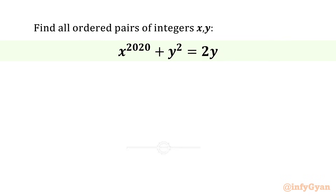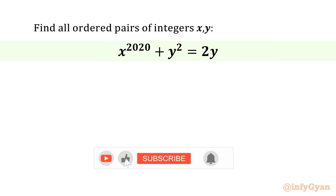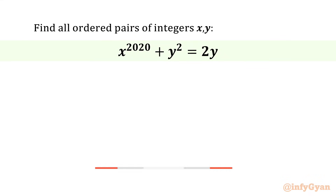Welcome to Infigyan, my dear friends. Today in this video we are going to solve one very interesting question from algebra. We have to find all ordered pairs of integers x, y if x to the power 2020 plus y squared equals 2y, given that x and y are integers.